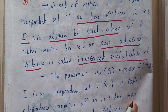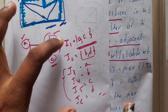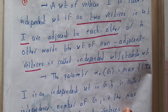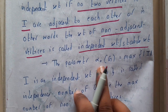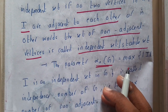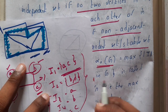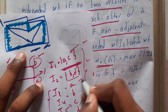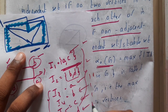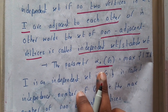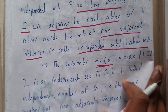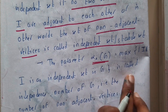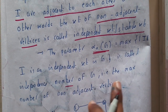For a particular graph, you can have multiple independent sets — yes, the answer is yes. The notation we use is alpha-naught of G, which indicates the maximum number of elements in an independent set. Alpha of G is the maximum of the cardinality of I, where I is an independent set in G. This is called the independence number of G — the maximum number of non-adjacent vertices.